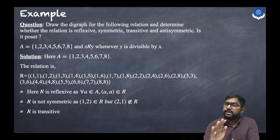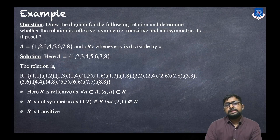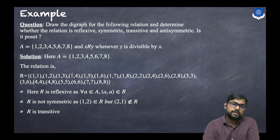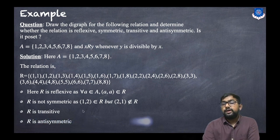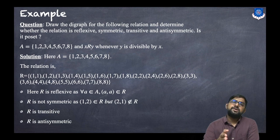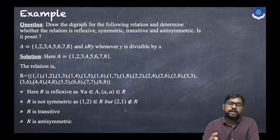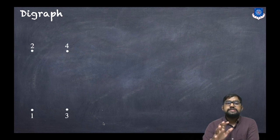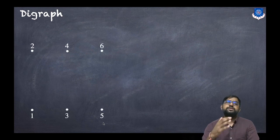R is a transitive relation — you can check for any pairs. For example: 1 divides 2 and 2 divides 4, so (1,2) and (2,4) are in R, and (1,4) is also there. R is also an anti-symmetric relation because the divides relation is anti-symmetric; you can verify for any numbers.